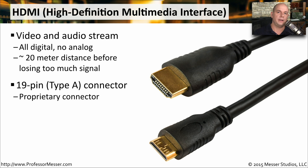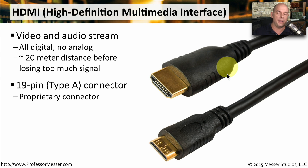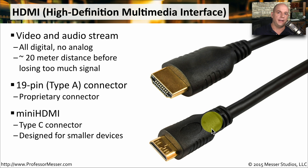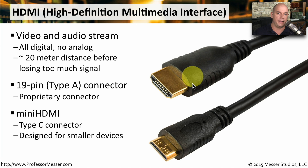There are two common HDMI connector types. The larger is the 19-pin Type-A connector — a proprietary connection clearly identifiable as HDMI. For smaller devices like cameras or mobile devices, there is the much smaller mini-HDMI, technically a Type-C connector, which takes up significantly less space.